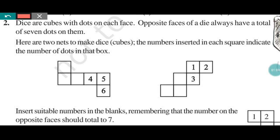In the first net, 6 will be opposite to 1, so we write 1 here. Now 4 is the opposite of 3, so this 3 will lie here when you fold. And this one is the opposite of 1. The opposite of 5 is 2, so here we have to write 2. In this way, you are required to fill this first net.